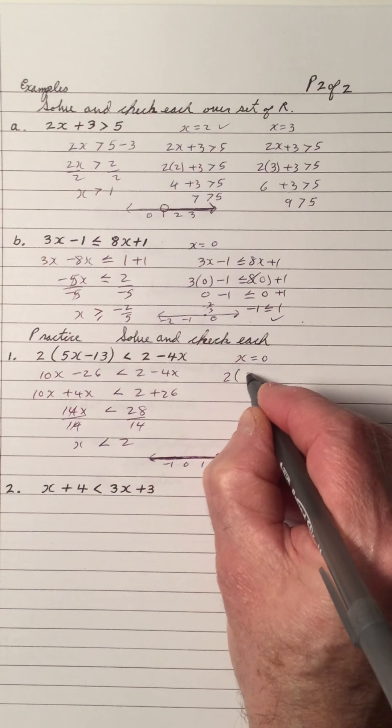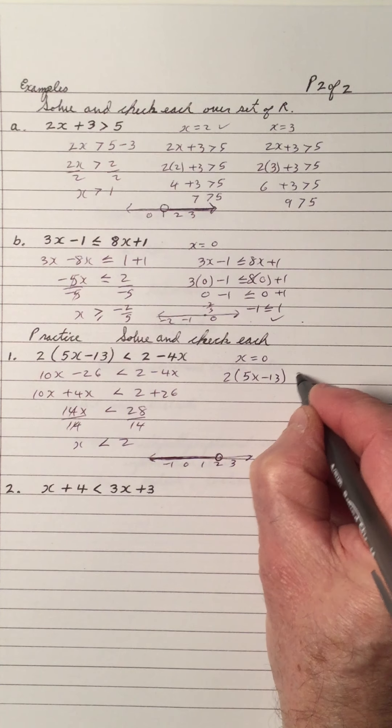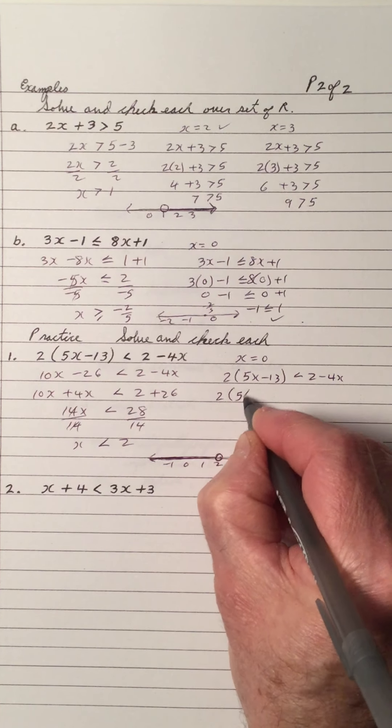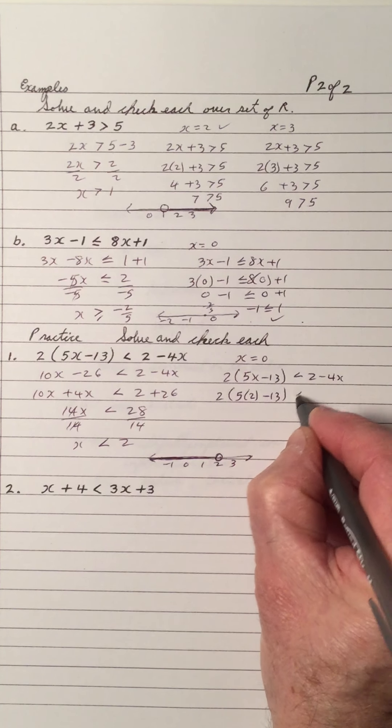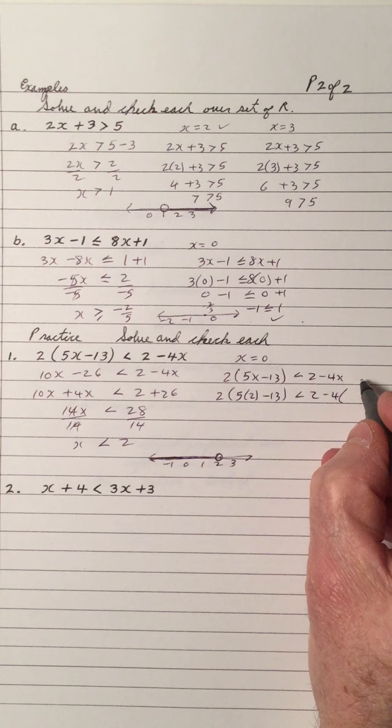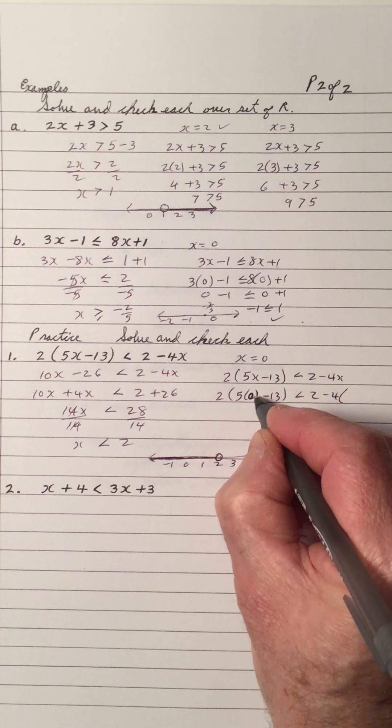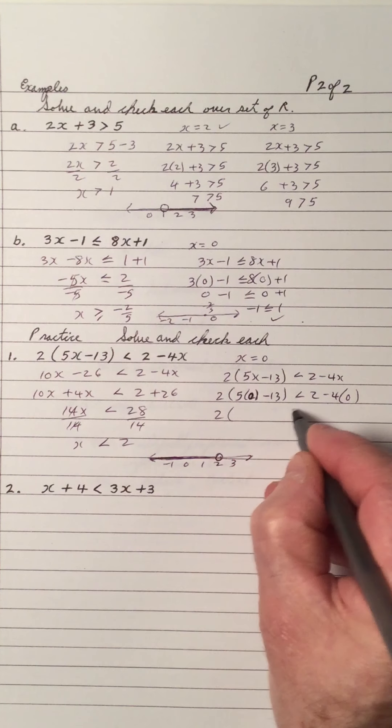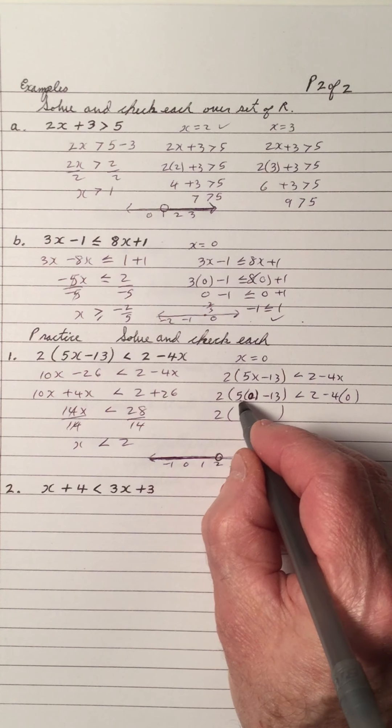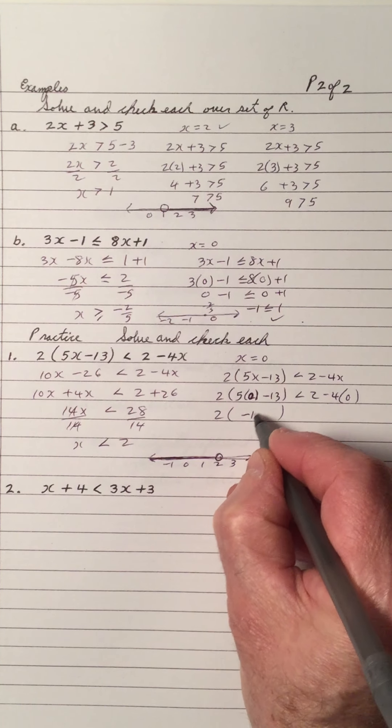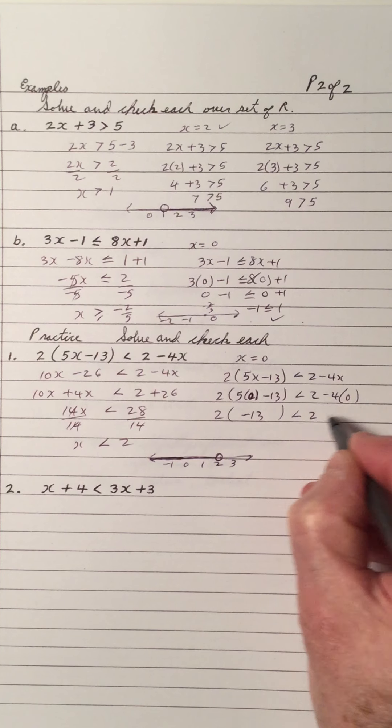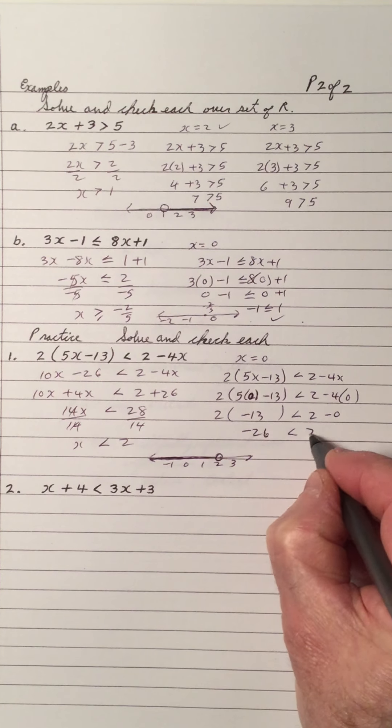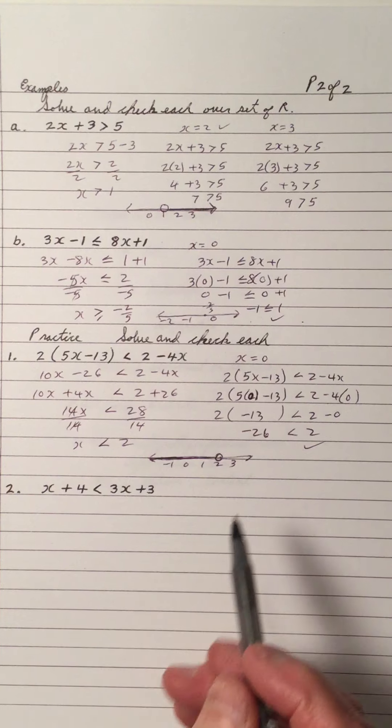So let's try 0. So 2 times 5x minus 13 less than 2 minus 4x. So I'm going to put a 0 in the place of x. That's what I'm checking out. So we do the inside first. We multiply. We get 5 times 0 is 0. 0 minus 13. And we get negative 4 times 0 is 0. So we have negative 26 less than 2. True. So 0 is the solution. So we're shading to the left.